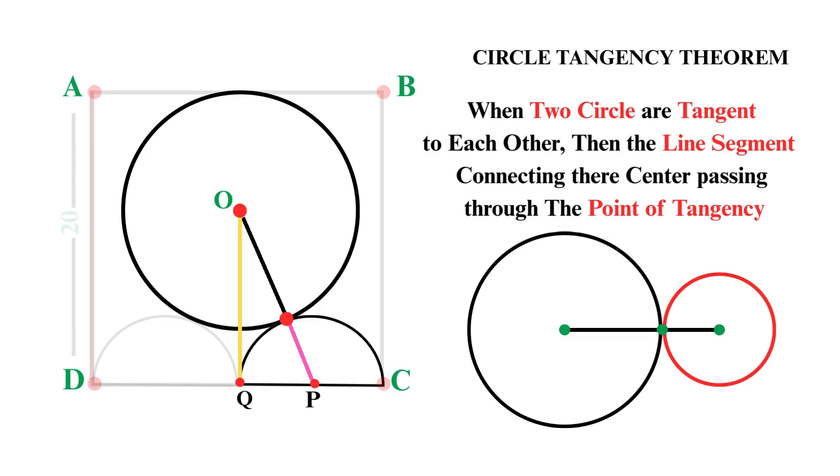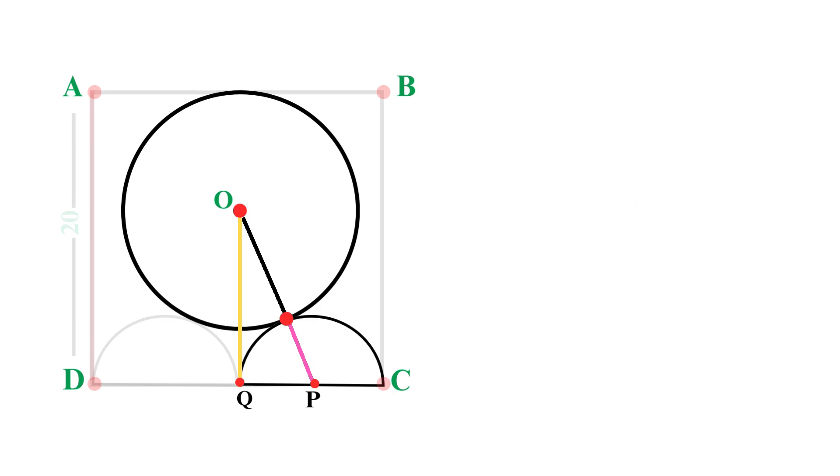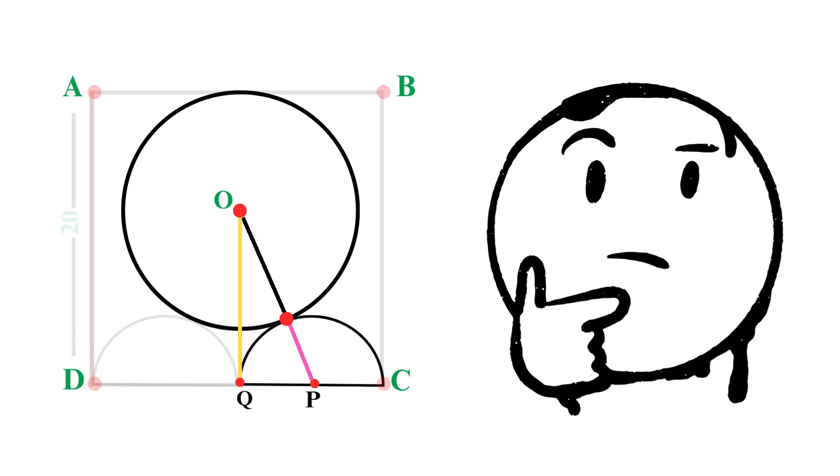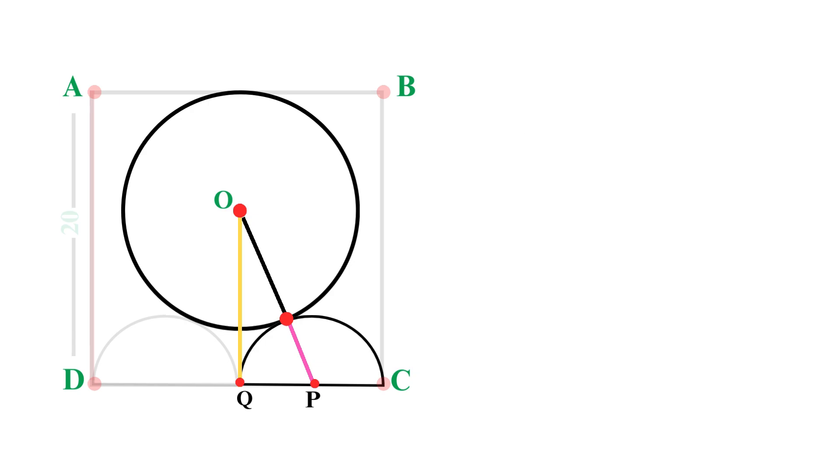According to our theorem, this line must pass through the point of contact. Now, here's the key point: the length of OP equals the sum of their radii. Do you know why? It is because we're measuring from the center of the large circle to the point of tangency, that is r, and then from the point of tangency to the center of the semicircle, that's 5. Therefore, OP equals r plus 5.